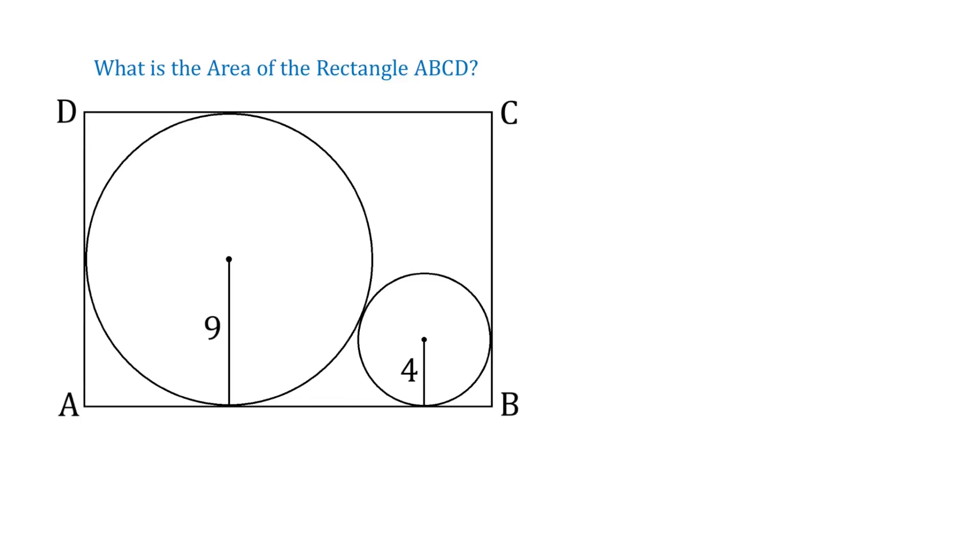In this figure, we have two circles inside the rectangle ABCD. The radius of the large circle is 9 units, and the radius of the small one is 4 units. What is the area of the rectangle ABCD?